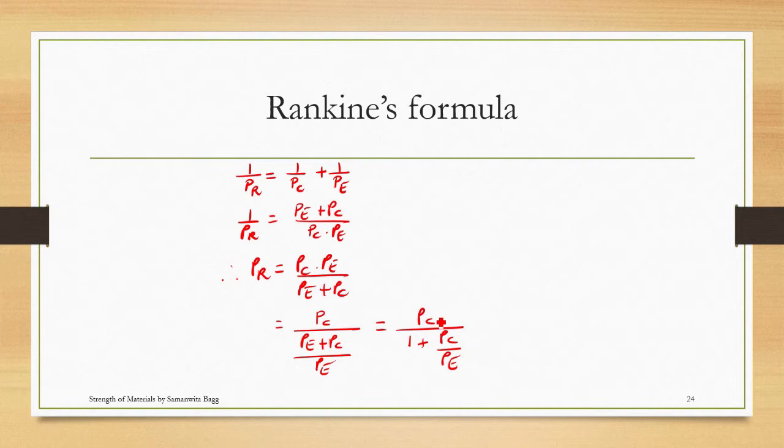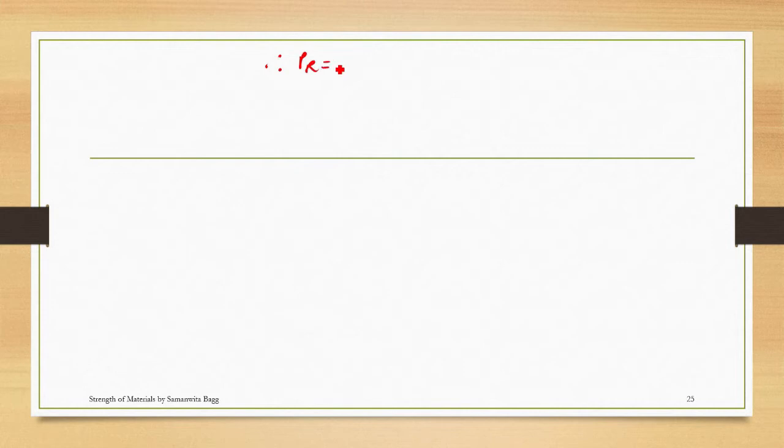Therefore, PR, which is PC—that is sigma c into A—upon 1 plus PC—that is sigma c into A—upon PE—that is pi squared EI upon Le squared. Now we know that I is AK squared, so when I substitute here I will get, therefore, PR is equal to sigma c into A upon 1 plus sigma c into A upon pi squared into E into AK squared upon Le squared.